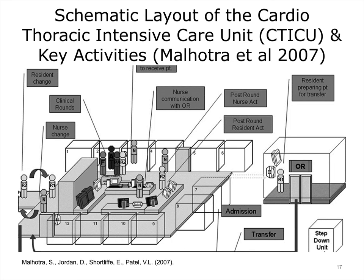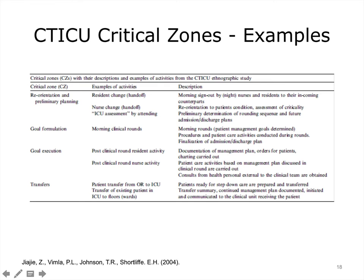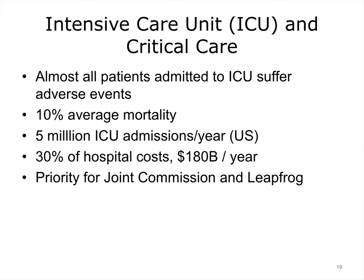This slide shows the layout of a cardiothoracic ICU and the key activities that take place there, with the roles of the actors. These are examples of critical zones, the activities that take place in them, and a description. The ICU is a place with a large number of adverse events and 10% average mortality. There are 5 million ICU admissions per year in the U.S. ICU admissions account for 30% of hospital costs, totaling $180 billion a year.